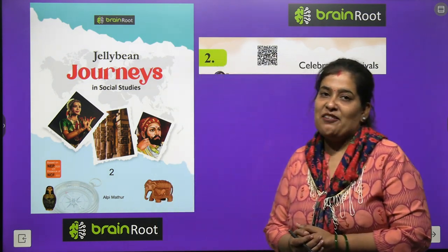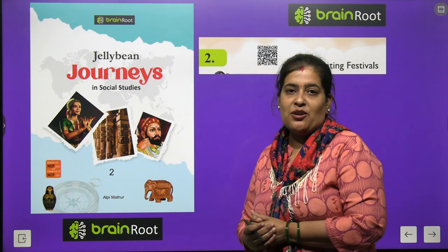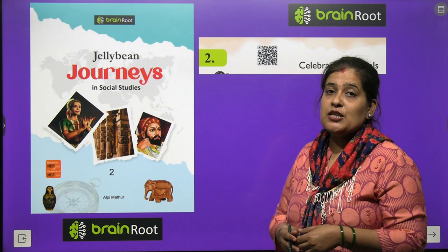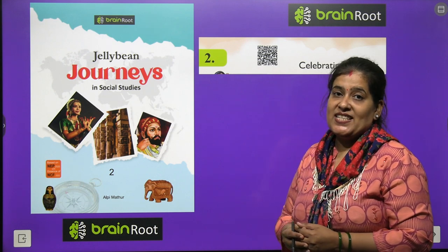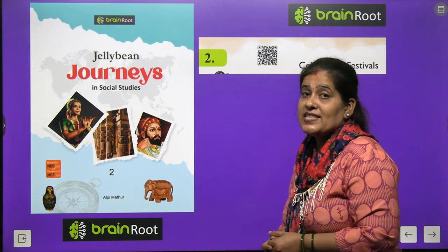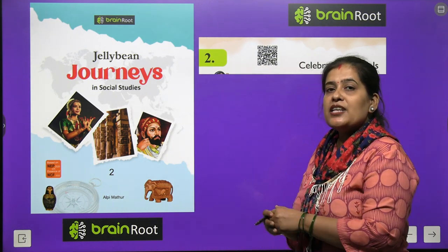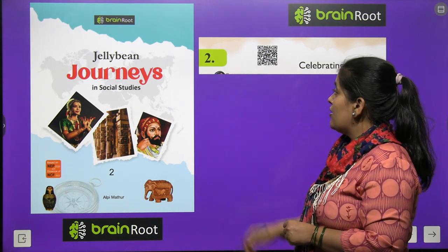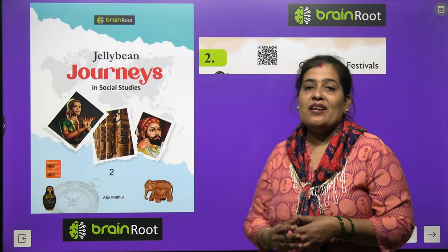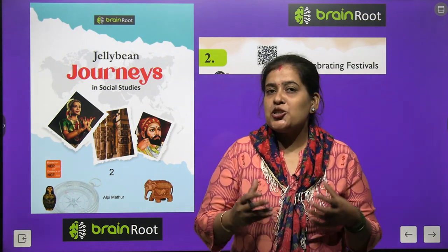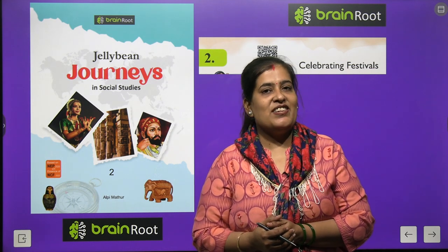Hello my dear kids, how are you? I hope you all are fine. So today we are going to start another chapter of our SST book by Brain Roots series. The name of our book is Jelly Bean Journeys in Social Studies, class 2. And today we are going to start chapter number 2. The name of our chapter is Celebrating Festivals.